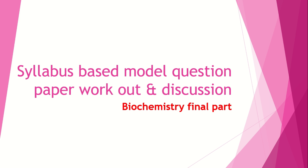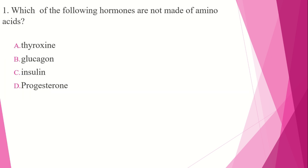Let's take the next question. The following hormones are not made of amino acids. Option A: thyroxin. Option B: glucagon. Option C: insulin. Option D: progesterone.